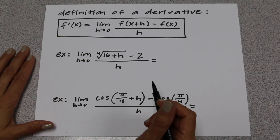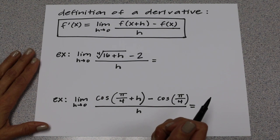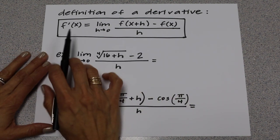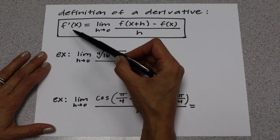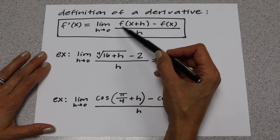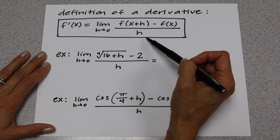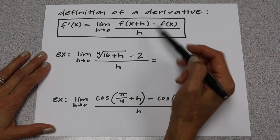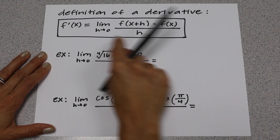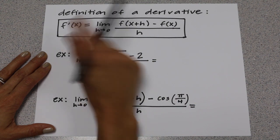We're going to look at problems where you're evaluating them using the definition of a derivative. The definition is: f prime of x is equal to the limit as h goes to 0 of f of x plus h minus f of x, all over h. Anytime you have something of this form, it's equal to f prime of x.